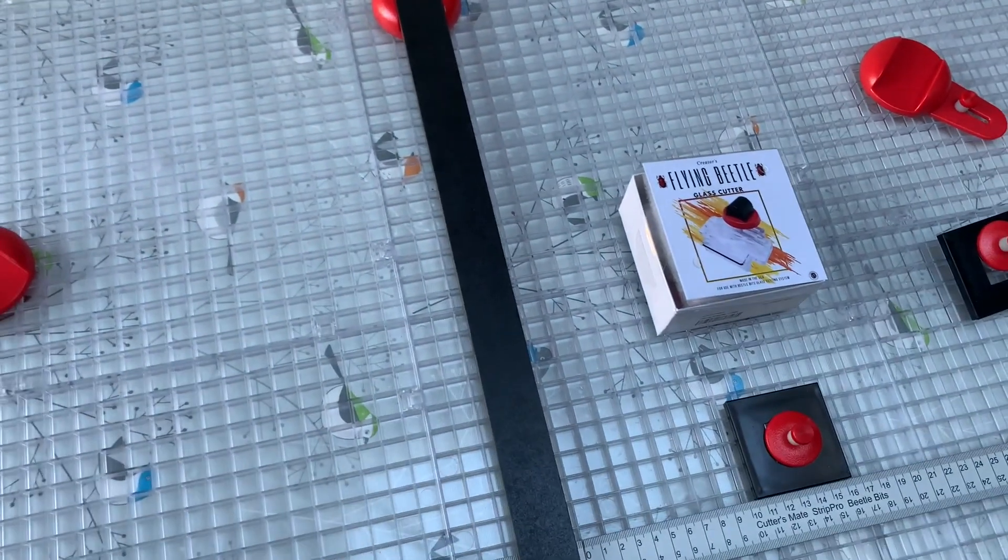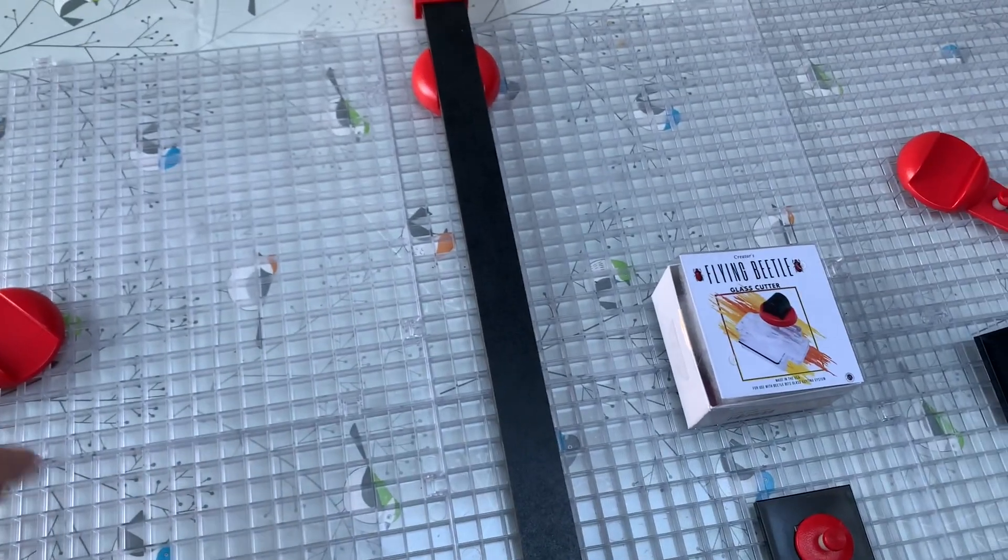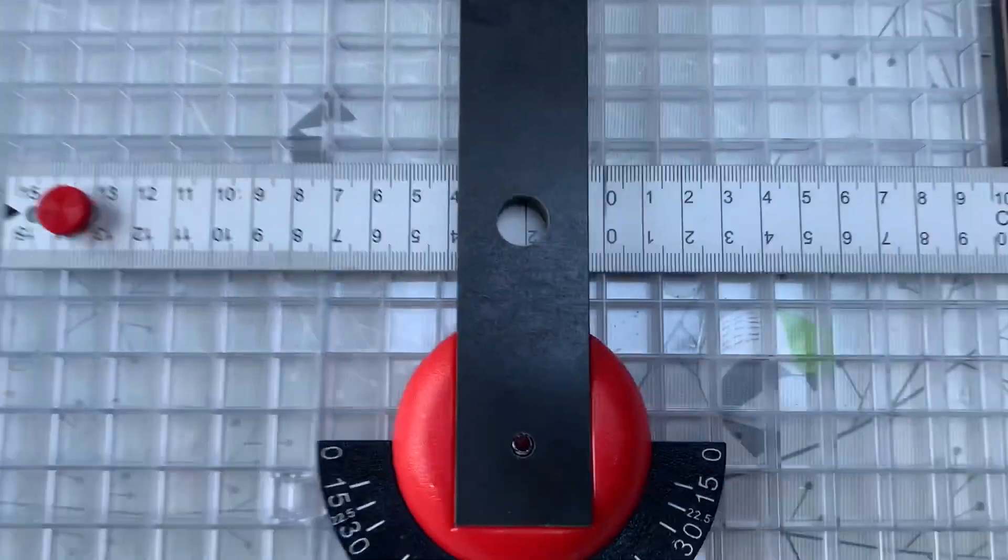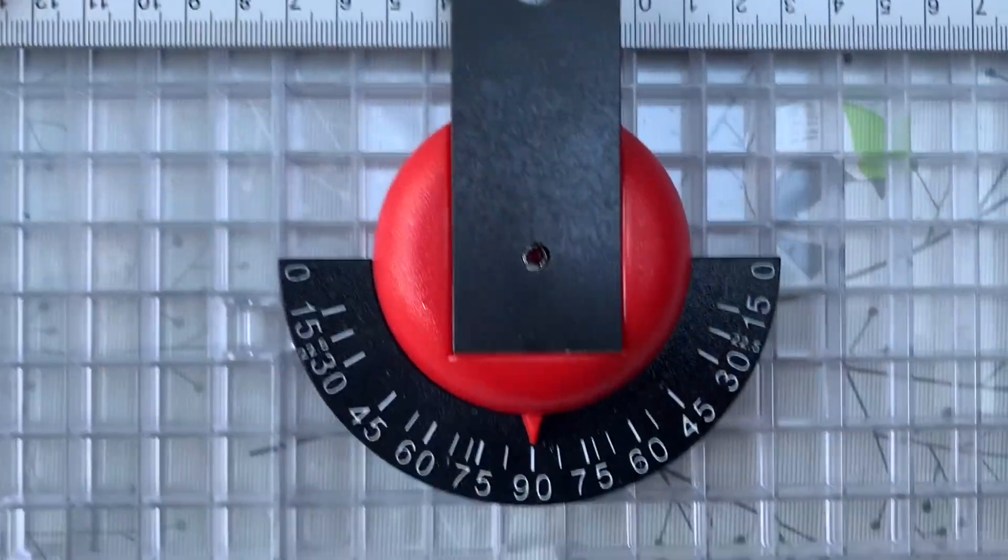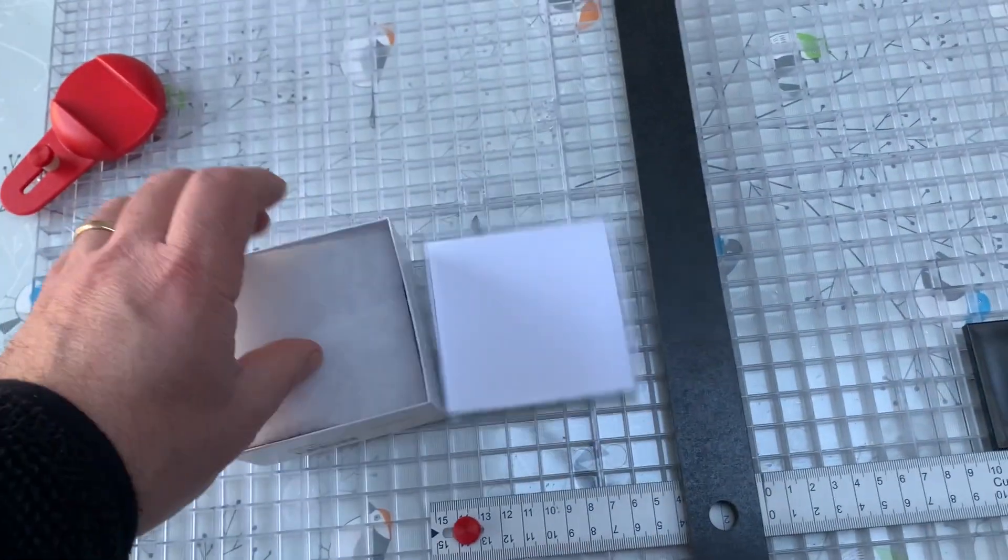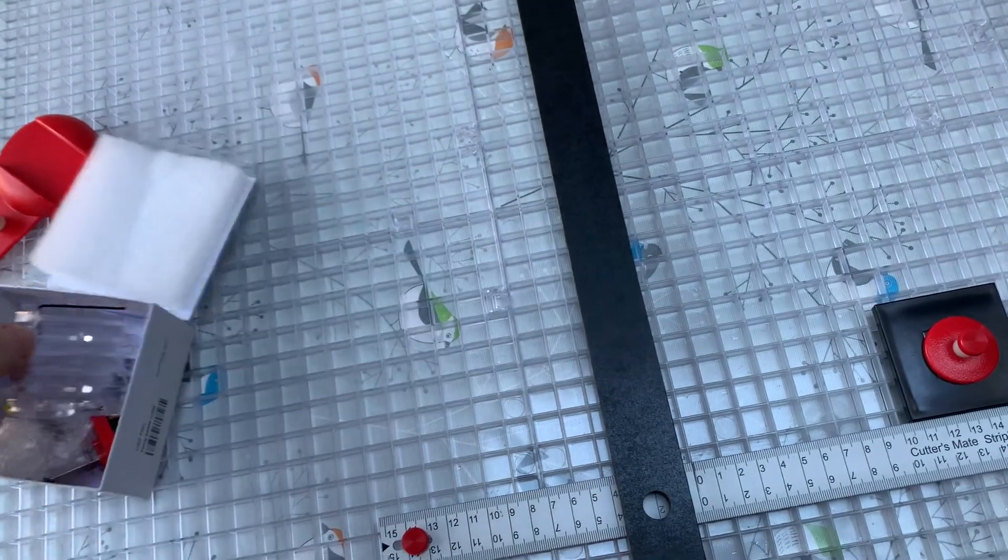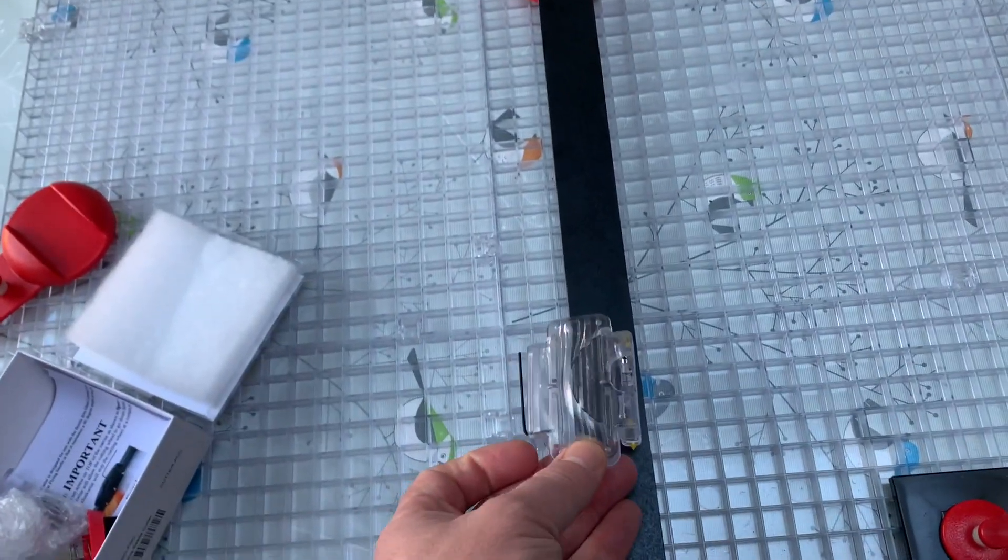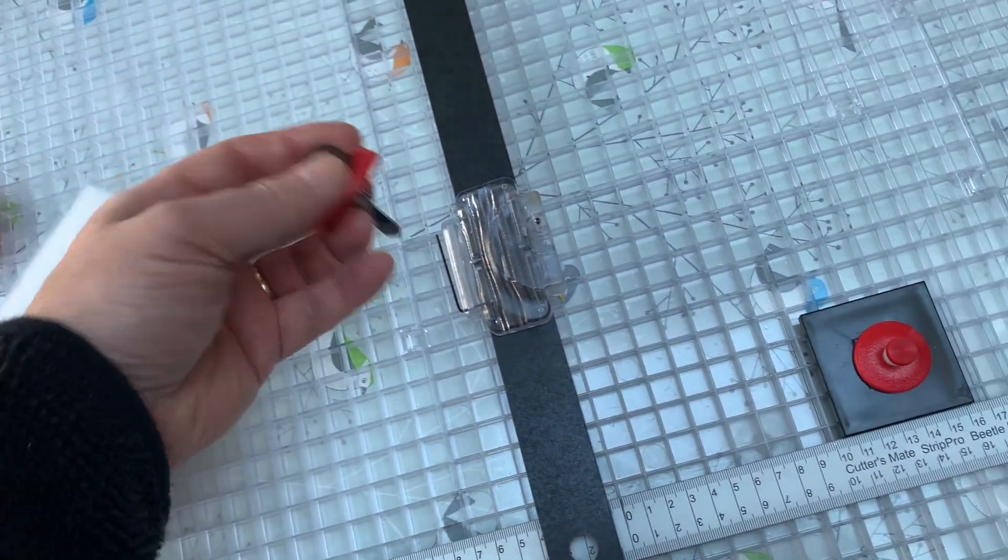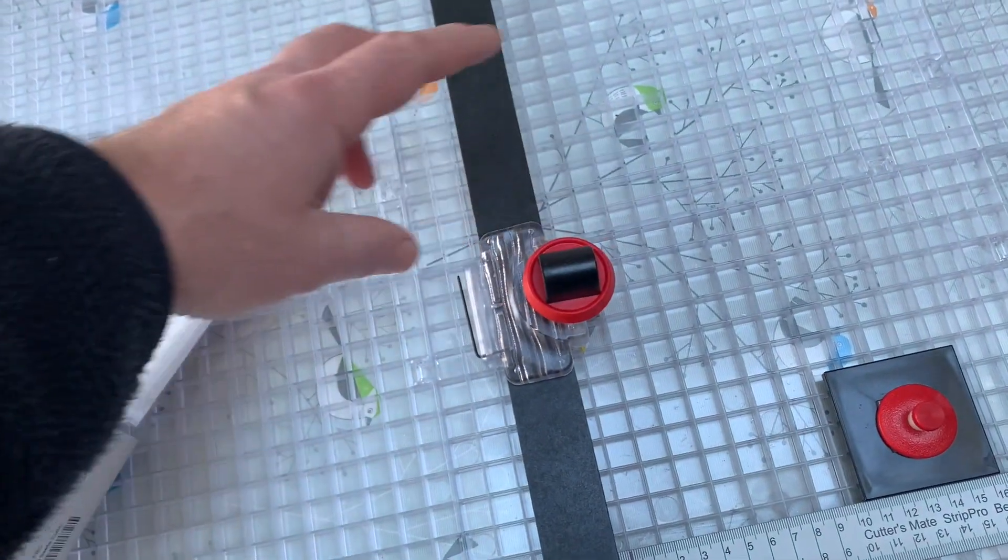You zero it on the 90, and then when you put it to your cutter head, which is dead easy, it just drops on and the cutting wheel drops straight in.